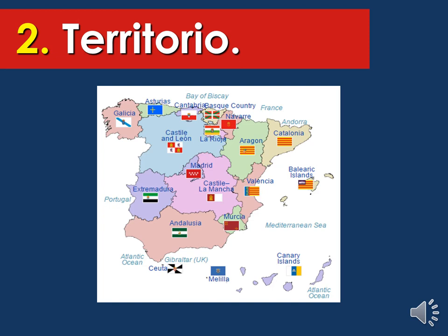These are the 17 autonomous communities. The main one to focus on is Madrid. We have Galicia, Asturias, Castilla León, Cantabria, Basque Country, La Rioja, Aragón, Navarra, Catalonia, Valencia, Balearic Islands, Murcia, Castilla-La Mancha, Andalusia, Extremadura, Ceuta, Melilla, and the Canary Islands.